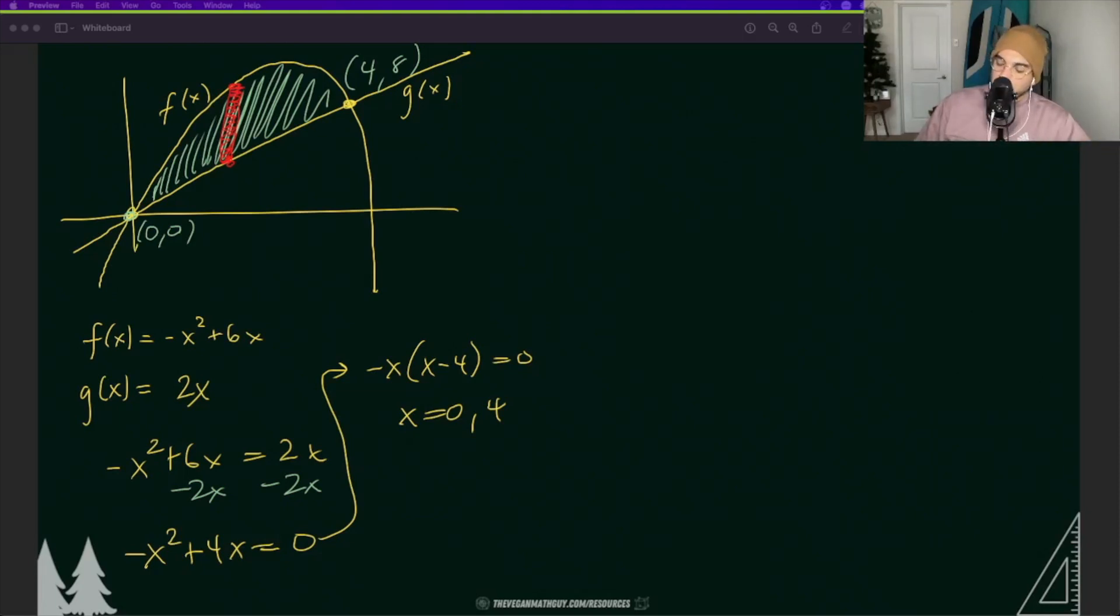So now we know that our area is going to be from 0 to 4 of f(x) minus g(x) so that's -x² + 6x - 2x. Let's simplify that and now we're just going to use the first fundamental theorem of calculus to find the area here.